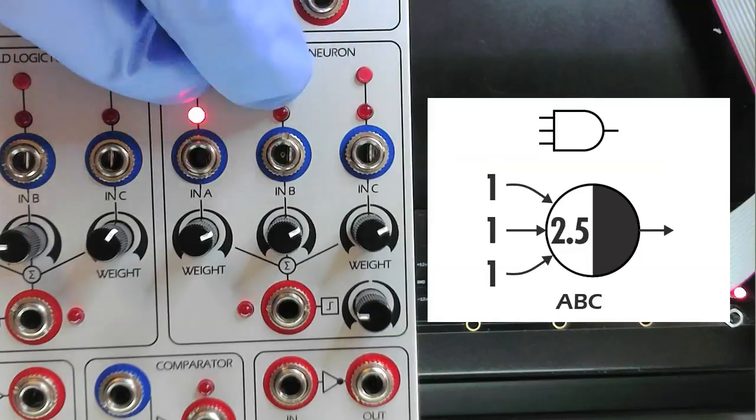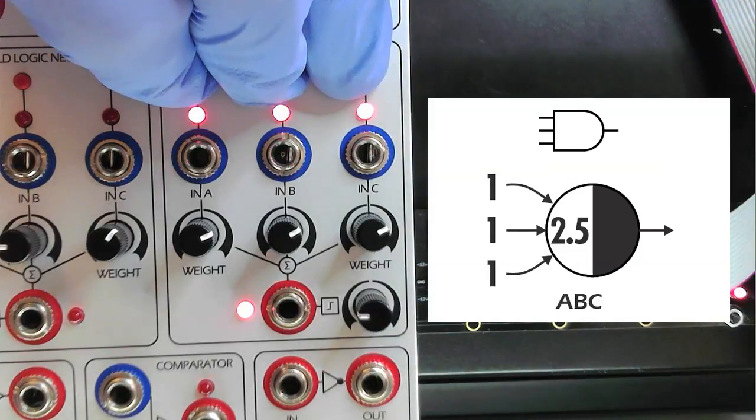Here's a quick look at a few more Boolean expressions, and how we would program them with the threshold logic neuron.